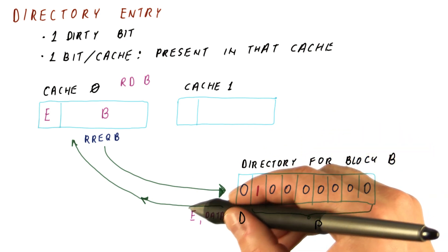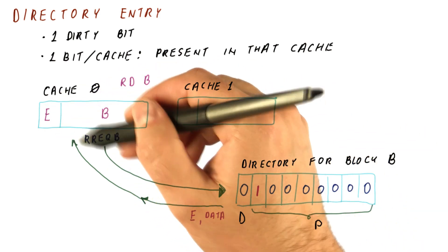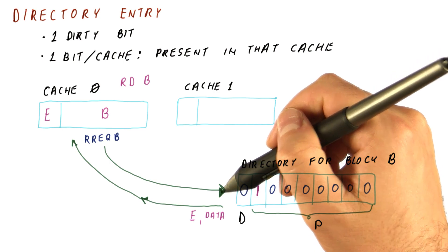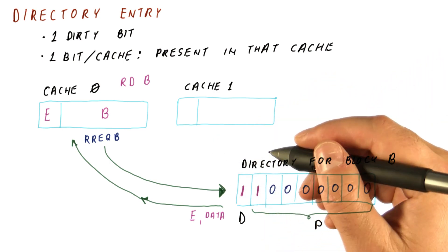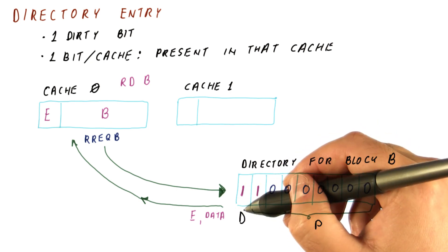When the directory sends the data to cache zero, it changes the presence bit for that cache to one. Also, we sent the data with exclusive access. If cache zero modifies the data, it doesn't have to notify the directory back. So we also set the dirty bit. The dirty bit here will not cause a writeback. It will cause us to find if a cache needs to do a writeback.